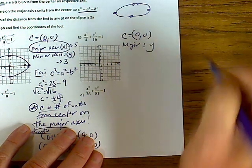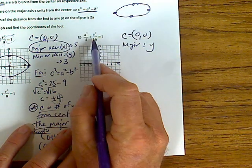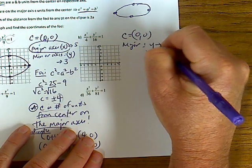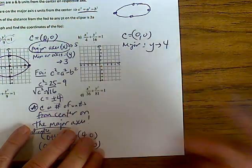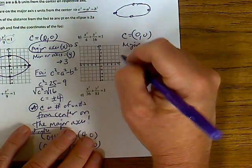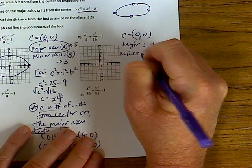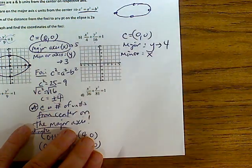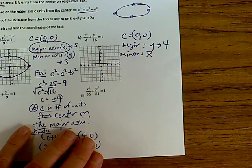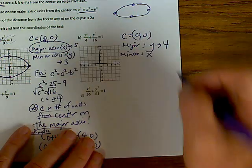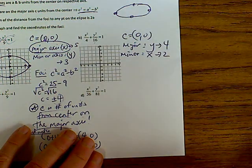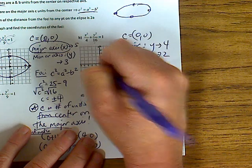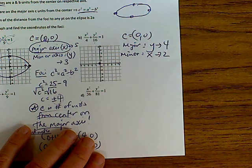...is going to be y this time because y has the bigger number underneath it. You'll be going four units — the square root of 16. The minor axis is going to be x because that has the smaller number; square root of 4 is two, so you'll be going two units.